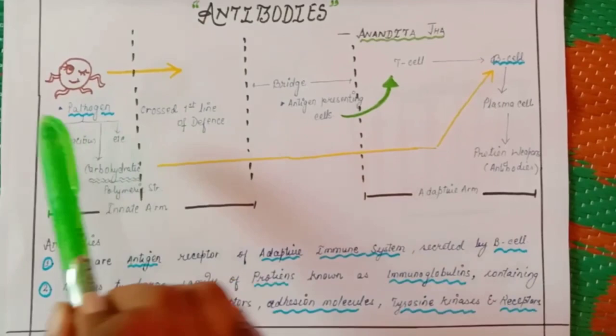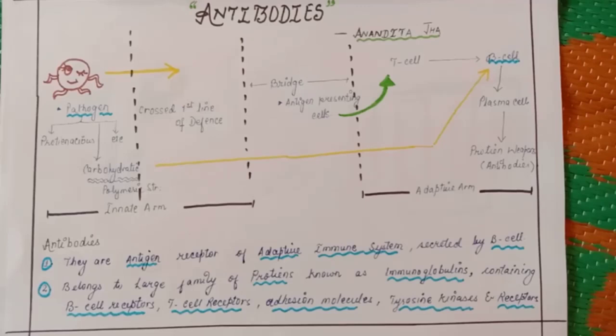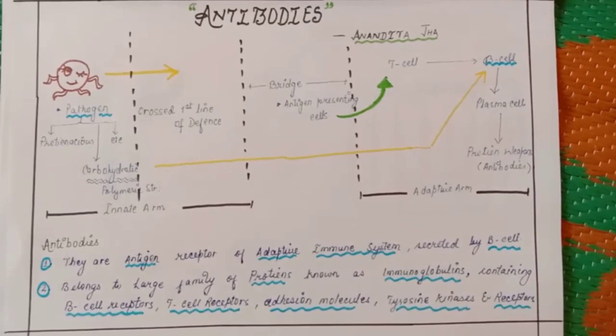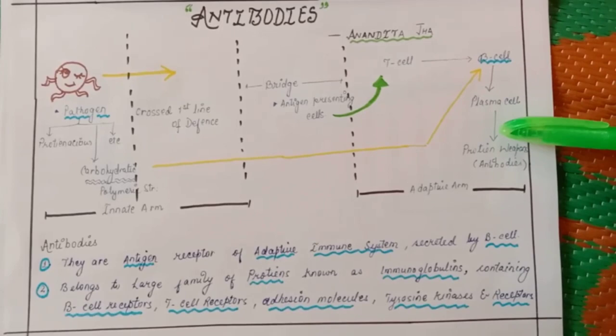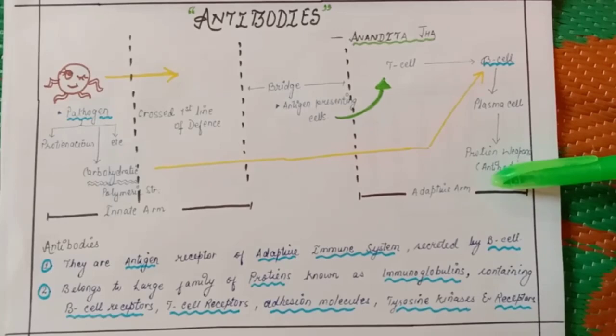It will go to the antigen presenting cell and the presenting cell will present that part of antigen to the T cell. T cell will further activate the B cell and B cell will transform to the plasma cell. Plasma cell will secrete proteinaceous weapons and these proteinaceous weapons are known as antibodies.